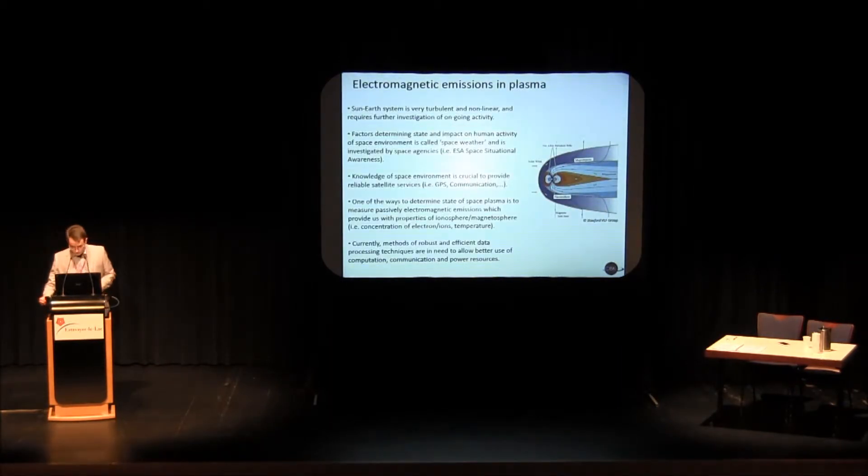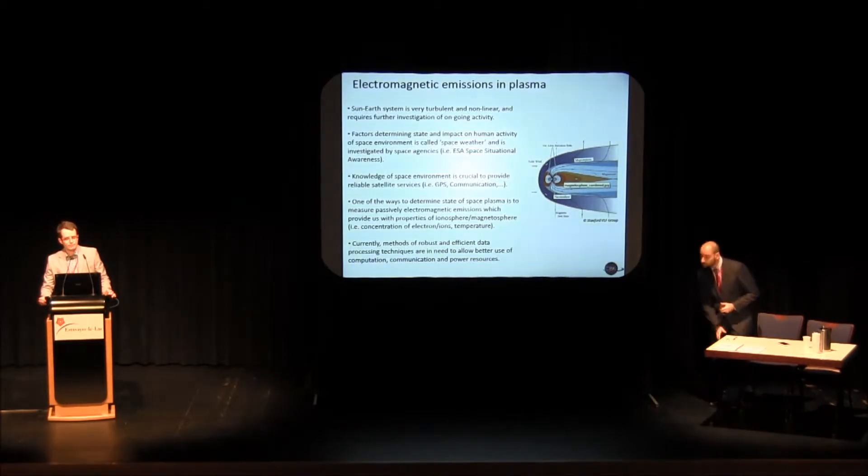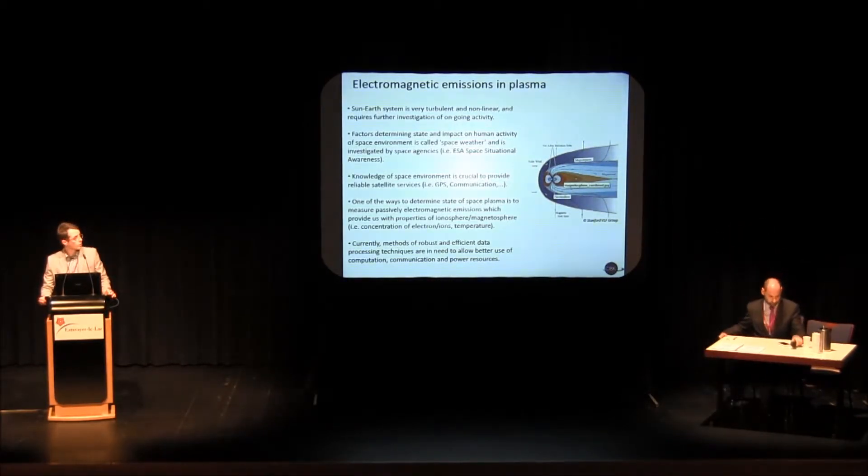If you take a look at the picture here, the situation of Earth is quite complicated. We've got ionosphere and radiation belts, then the magnetosphere which is blown by the Sun. Generally speaking, the whole system is very turbulent and non-linear. This requires still further investigation. All the factors determining the state of near-Earth plasma falls into the term of space weather.